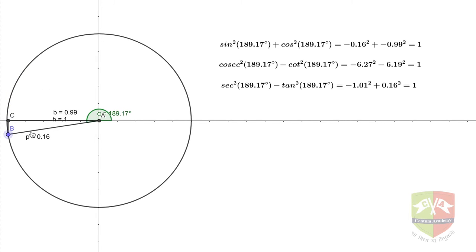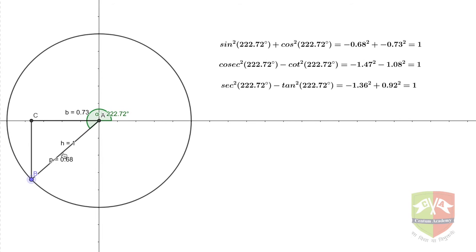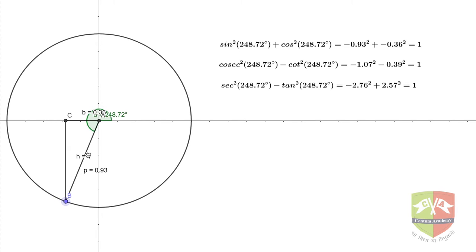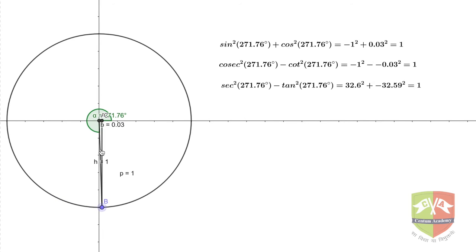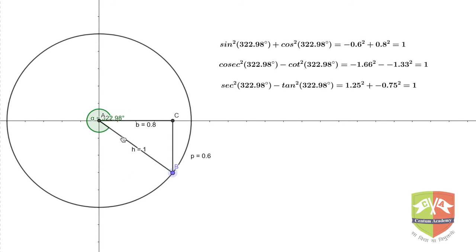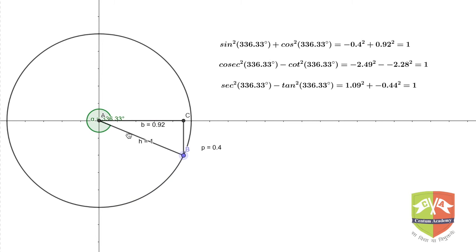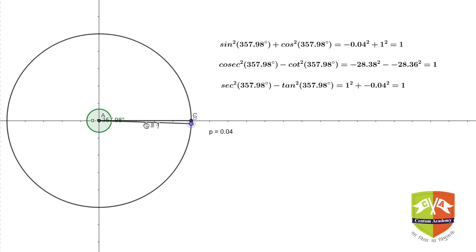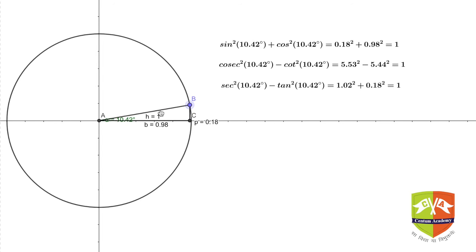As I switch over to the third quadrant it stays the same. At any given value of theta, the three identities show that the total sum is not going to change. Sine square theta plus cos square theta is always one, cosecant square theta minus cot square theta is always one, and secant square theta minus tan square theta is always one.